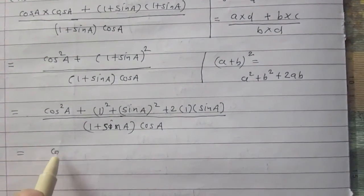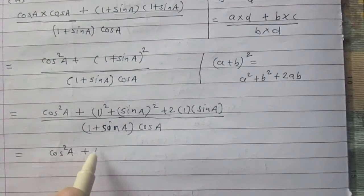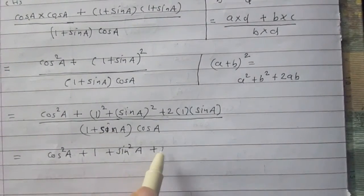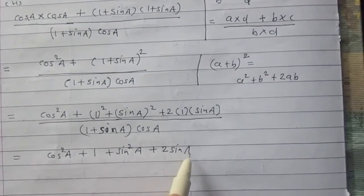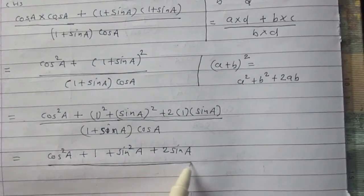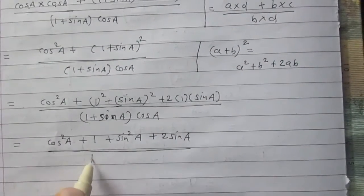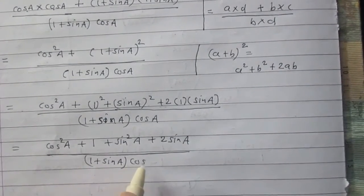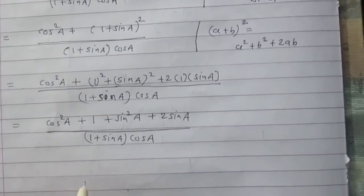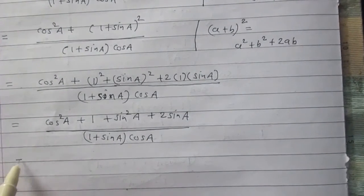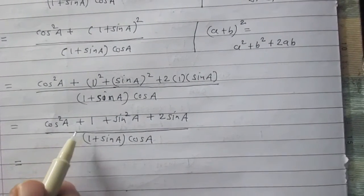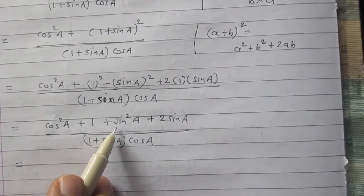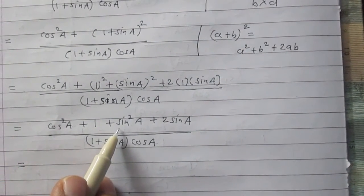It is cos squared A plus 1 plus sin squared A plus twice of sin A, over 1 plus sin A multiplied by cos A. In the numerator, we see that cos squared A plus sin squared A, and the result is 1.